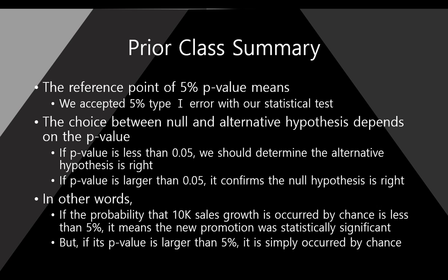So, if p-value is less than 0.05, we should determine the alternative hypothesis is right. Otherwise, if p-value is larger than 0.05, it confirms that the null hypothesis is right.